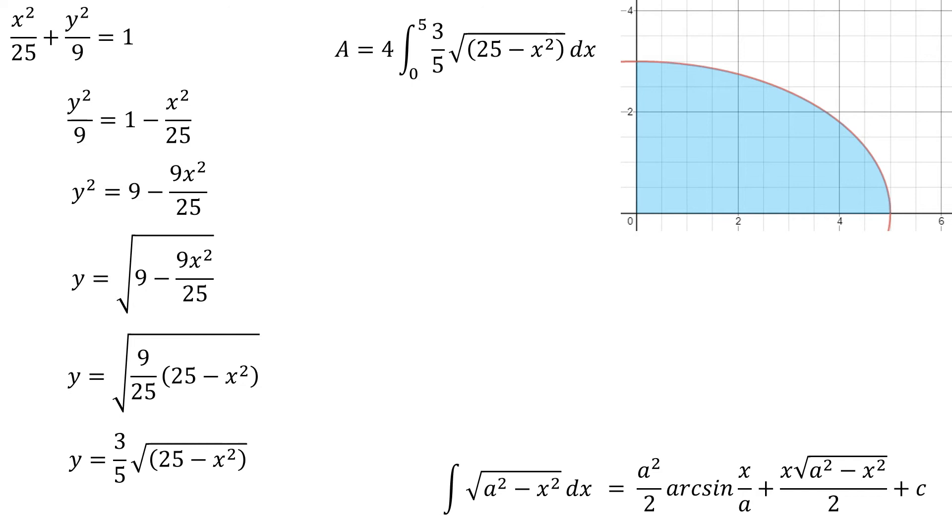Now, because that 3 5ths is just a coefficient, I can actually bring it outside the integral, right? Because coefficients just sit there and look cute when we integrate. And so I've actually just have to figure out the integral and then multiply that value by 12 5ths.